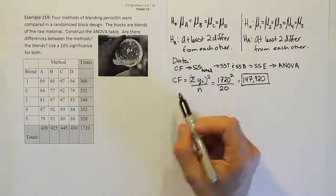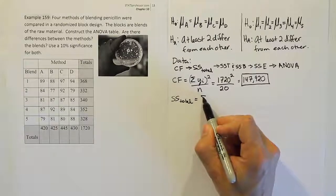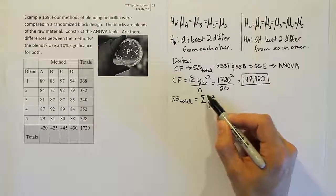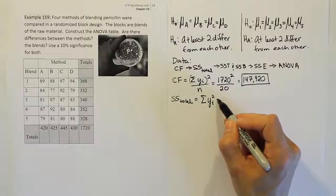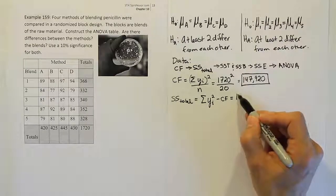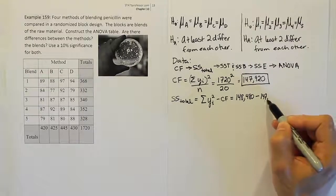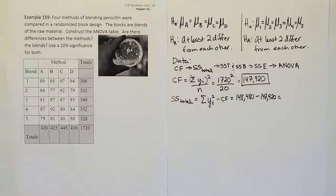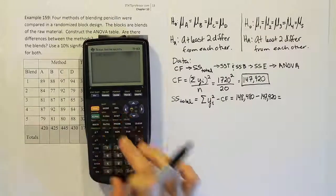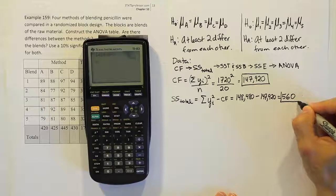The sum of squares total requires squaring each individual cell value and summing them all — that tedious step has already been worked out to give 148,480. Then we subtract the correction factor: 148,480 minus 147,920 equals 560. So the total sum of squares is 560.